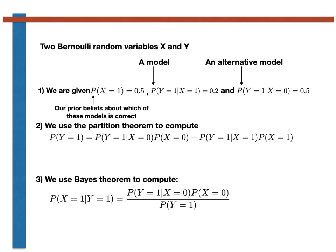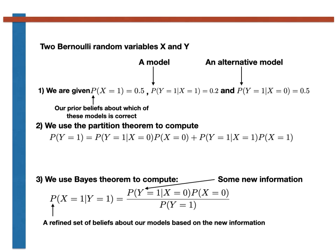With this reinterpretation in mind, let's consider what we are doing when we apply Bayes' theorem. The conditional probability in the numerator is the probability that we would have got this particular result given that we are sampling from the model with X equals 0. The denominator is the total probability of getting this result from both models. The quotient is thus the probability that we are sampling from the first model. In other words, when we use Bayes' theorem, we are given some new information — namely the fact that Y was equal to 1 when we did our experiment — which allows us to refine our beliefs about which of the two putative distributions generated the data.